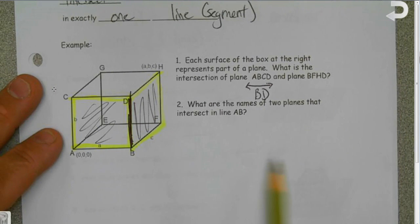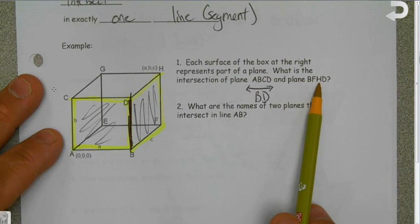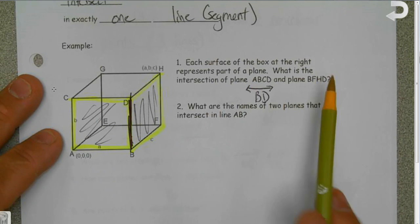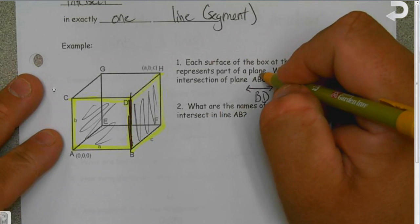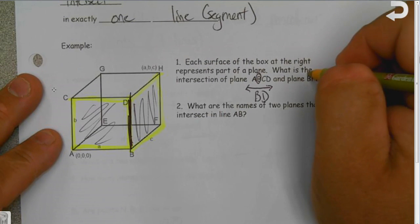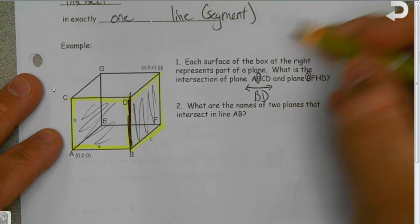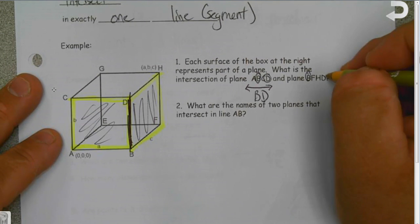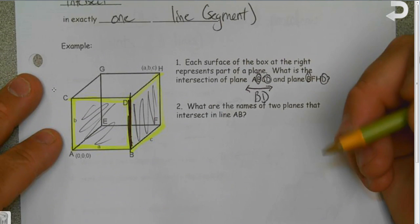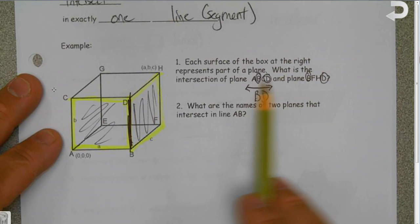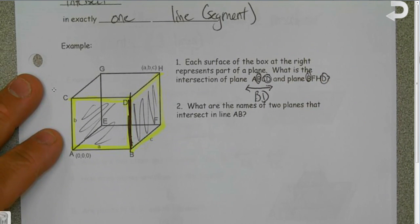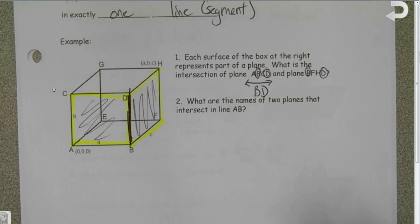Now what I want you to do is look at these two planes and ask yourself what two letters did they have in common. Well, this plane had a B, this plane had a B, this plane had a D, this plane had a D. So it makes sense that they intersect at plane BD or line BD.